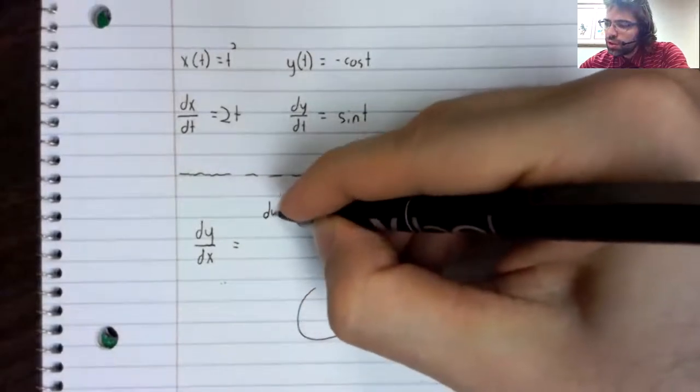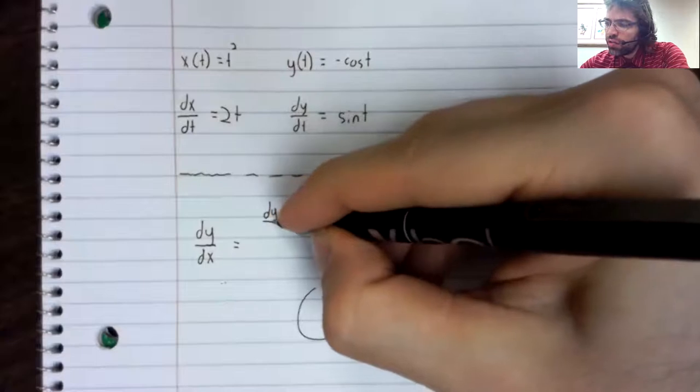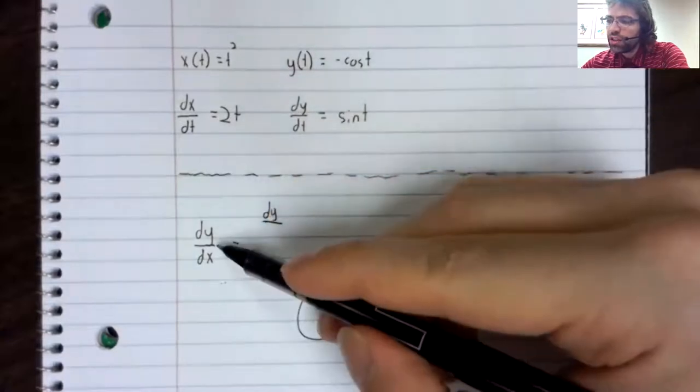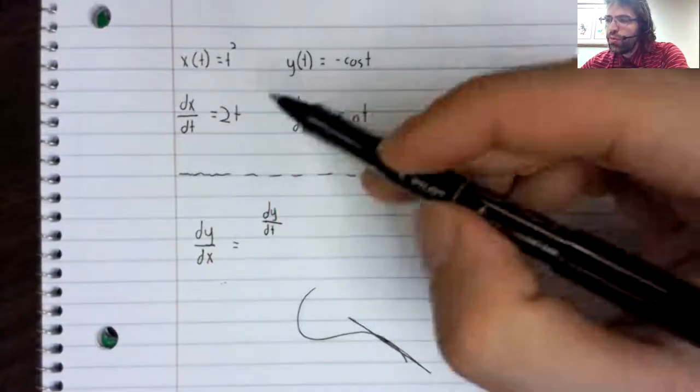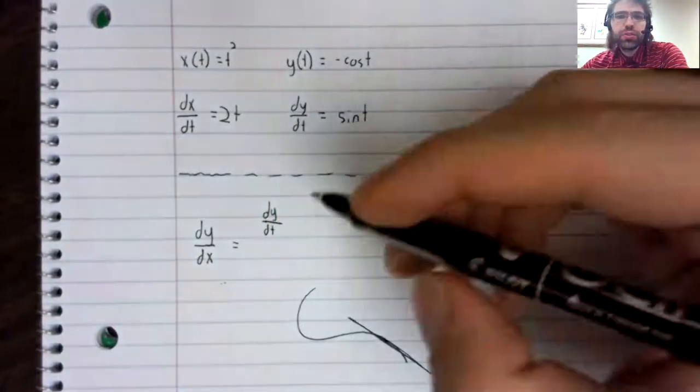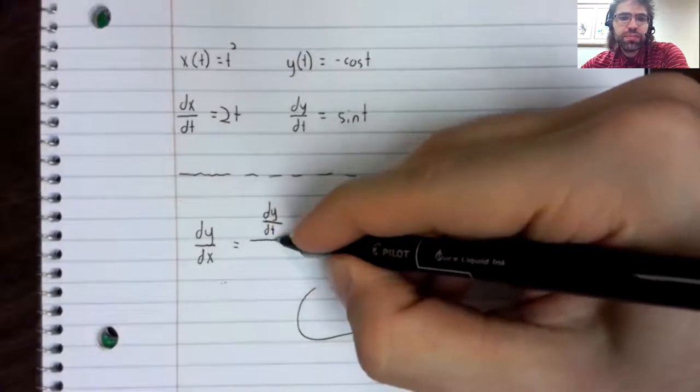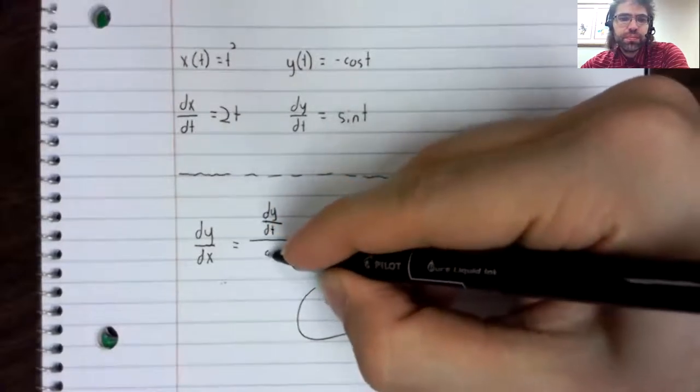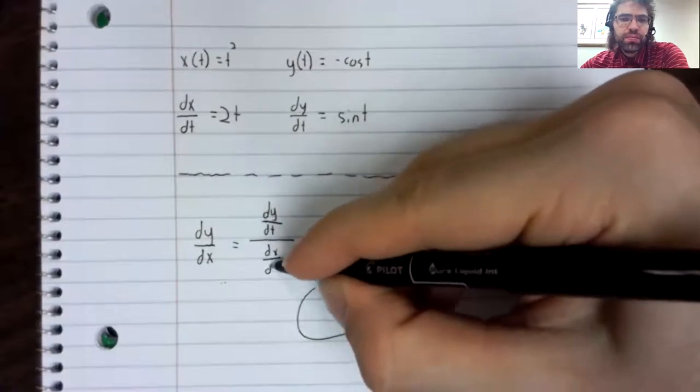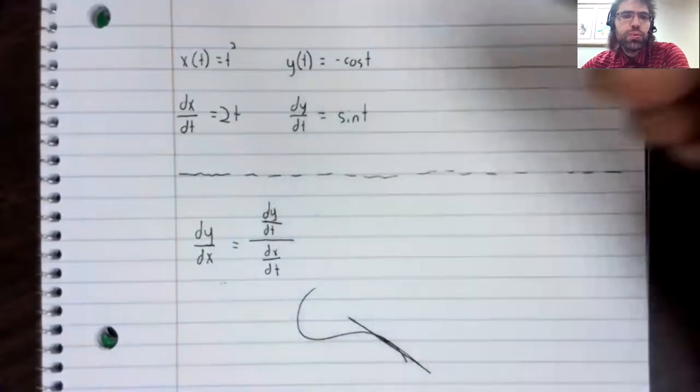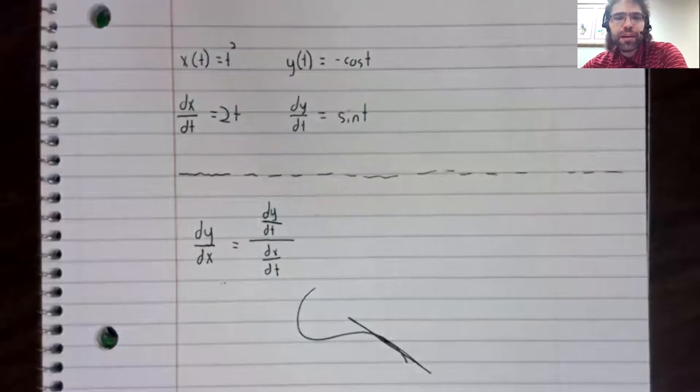It turns out that to find this derivative, you find these two derivatives, and then you divide them.